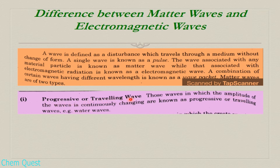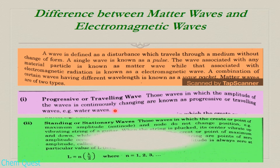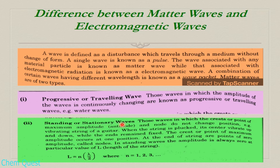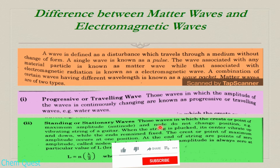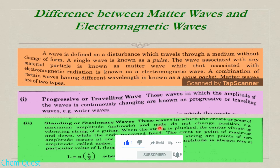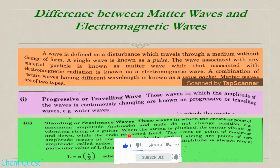In progressive waves, the amplitude changes continuously. The crest, or point of maximum amplitude, is called an anti-node. The second type is standing or stationary waves, in which the amplitude does not change and the anti-nodes and nodes do not change their position.